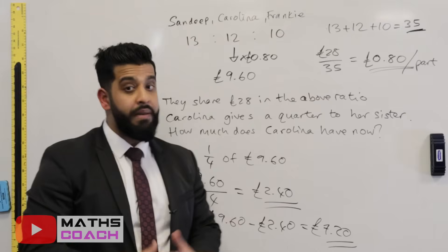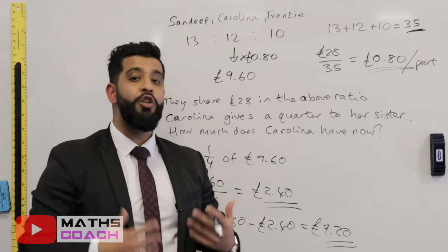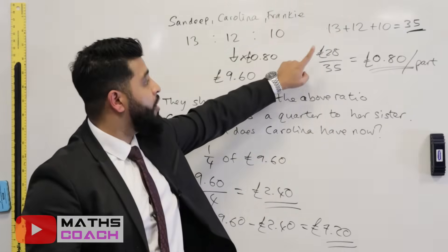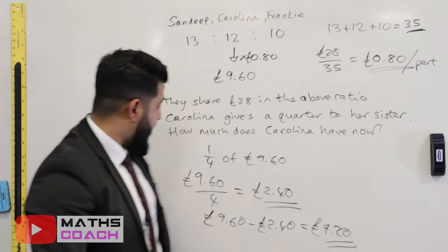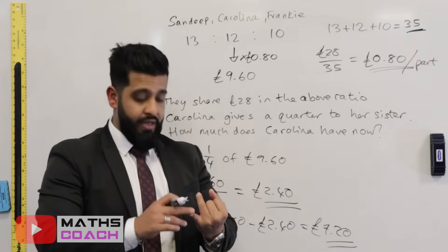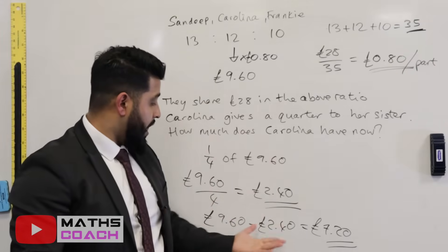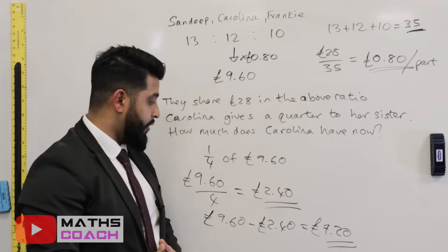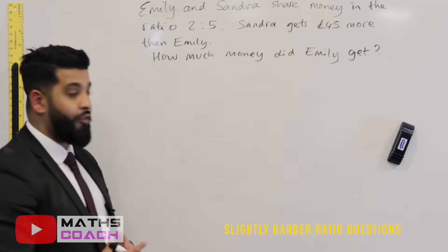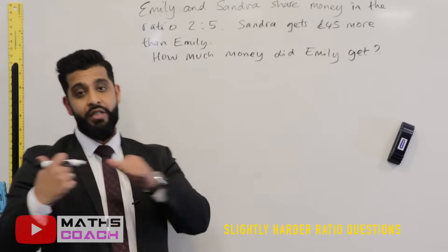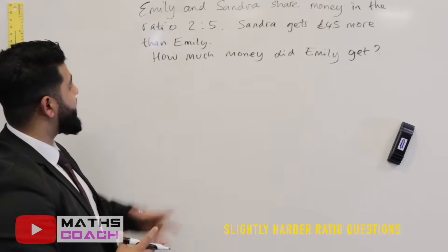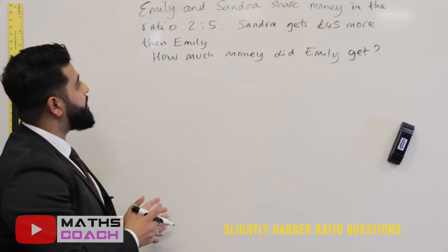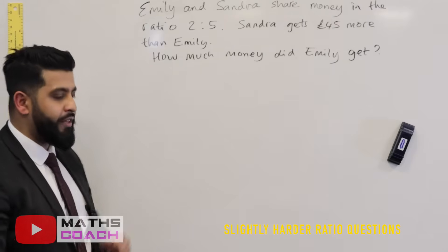If this question appears on a non-calculator paper, you'll need to use the bus stop method or long division, and mental arithmetic for the division by four and the subtraction. This next question demonstrates how much ratio questions have evolved. Let's read: Emily and Sandra share money in the ratio two to five; however Sandra gets 45 pounds more than Emily. How much money did Emily get?